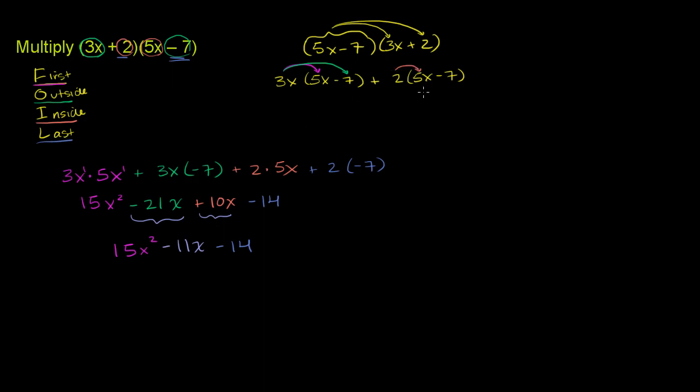And we can distribute the 2 on that negative 7. Now, if we do it like this, what do we get? 3x times 5x, that's this right over here. If we do 3x times negative 7, that's this term right over here.